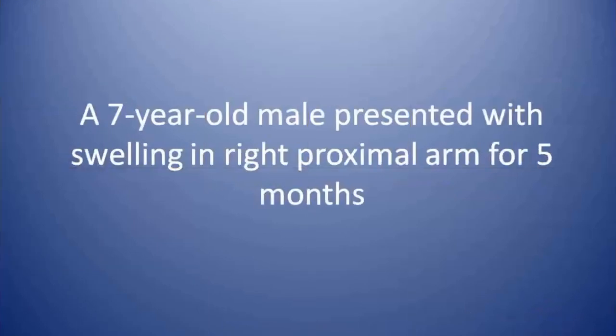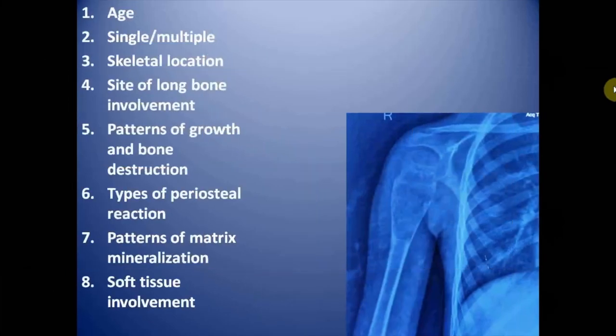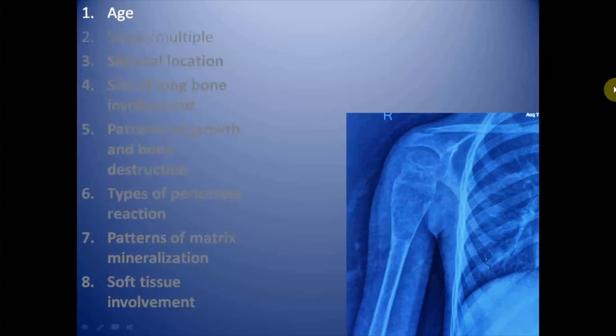This is the case of a seven-year-old male who presented with swelling in the right proximal arm for five months. This is the frontal radiograph of the right shoulder of the patient. We are going to evaluate this lesion on the basis of the following criteria. First is age of the patient — seven years, a skeletally immature patient.